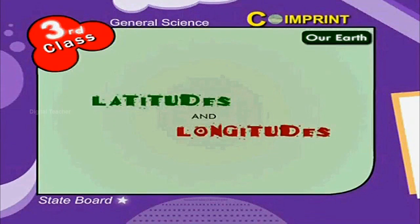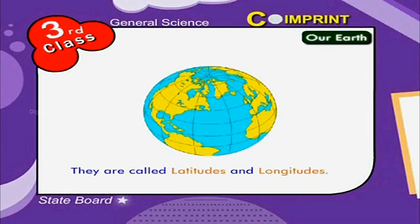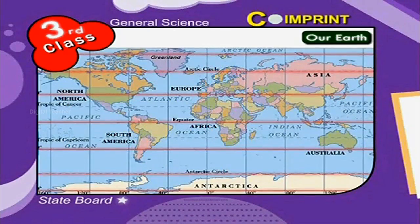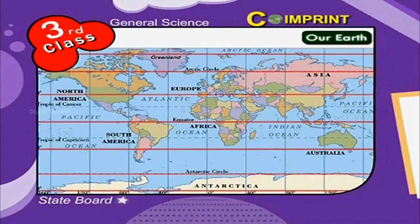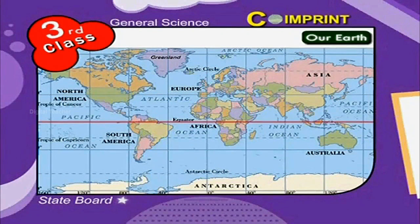Latitudes and longitudes. You might have seen the lines on the globe. What are all those? They are called the latitudes and the longitudes. The imaginary horizontal lines on the globe are called the latitudes. The one at the middle is called the equator. It is the largest latitude with zero degrees.